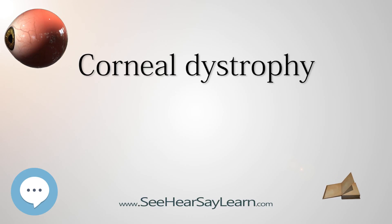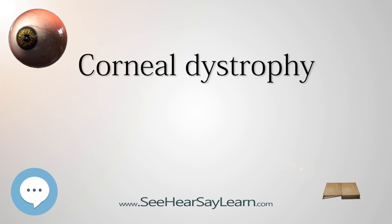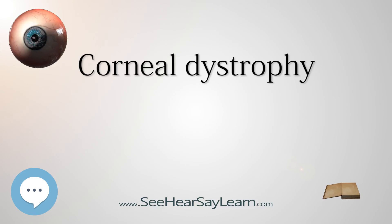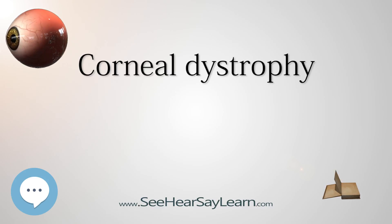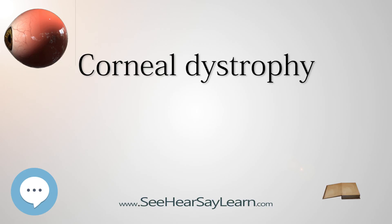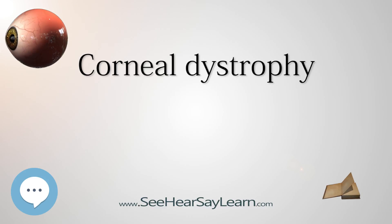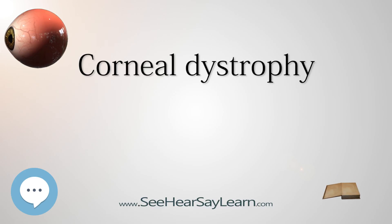Epithelial and subepithelial dystrophies include: epithelial basement membrane dystrophy, epithelial recurrent erosion dystrophies (EREDs), Franceschetti corneal dystrophy, dystrophia Helsinglandica, subepithelial mucinous corneal dystrophy, Meesmann corneal dystrophy, Lisch epithelial corneal dystrophy, and gelatinous drop-like corneal dystrophy. Bowman layer dystrophies include Reis-Bücklers and Thiel-Behnke corneal dystrophies. Stromal dystrophies include TGFB1 corneal dystrophies, lattice corneal dystrophy types and variants, granular corneal dystrophy types 1 and 2, and macular corneal dystrophy.